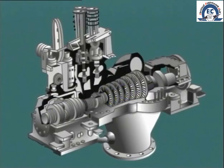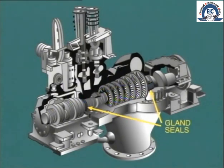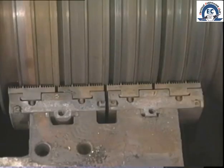In order to reduce this leakage as far as possible, gland seals are located at each end of the casing. The aim of the seal is to provide a high resistance to the flow of steam or air. This is achieved by the use of a labyrinth seal.